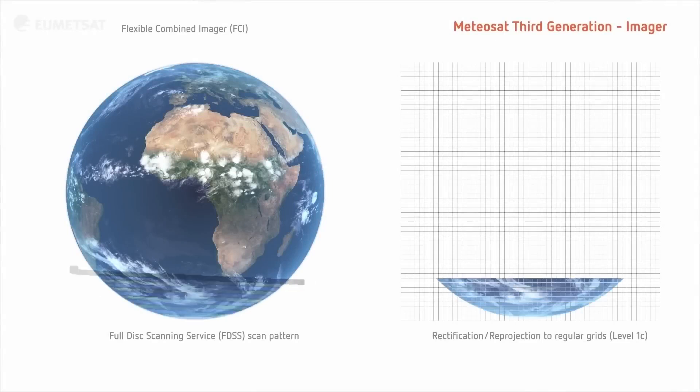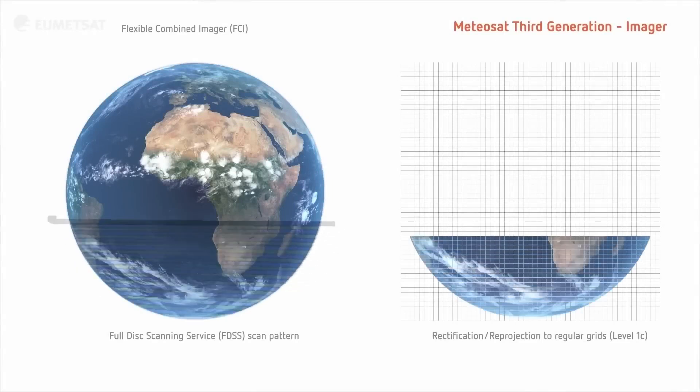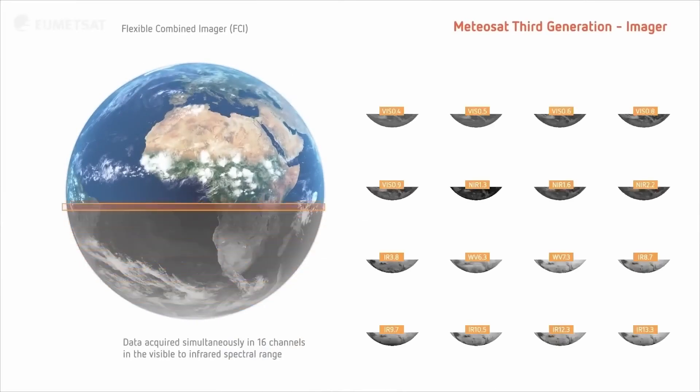The Meteosat third generation imager is currently undergoing a commissioning phase, where its instruments are switched on, and the data they collect are calibrated.